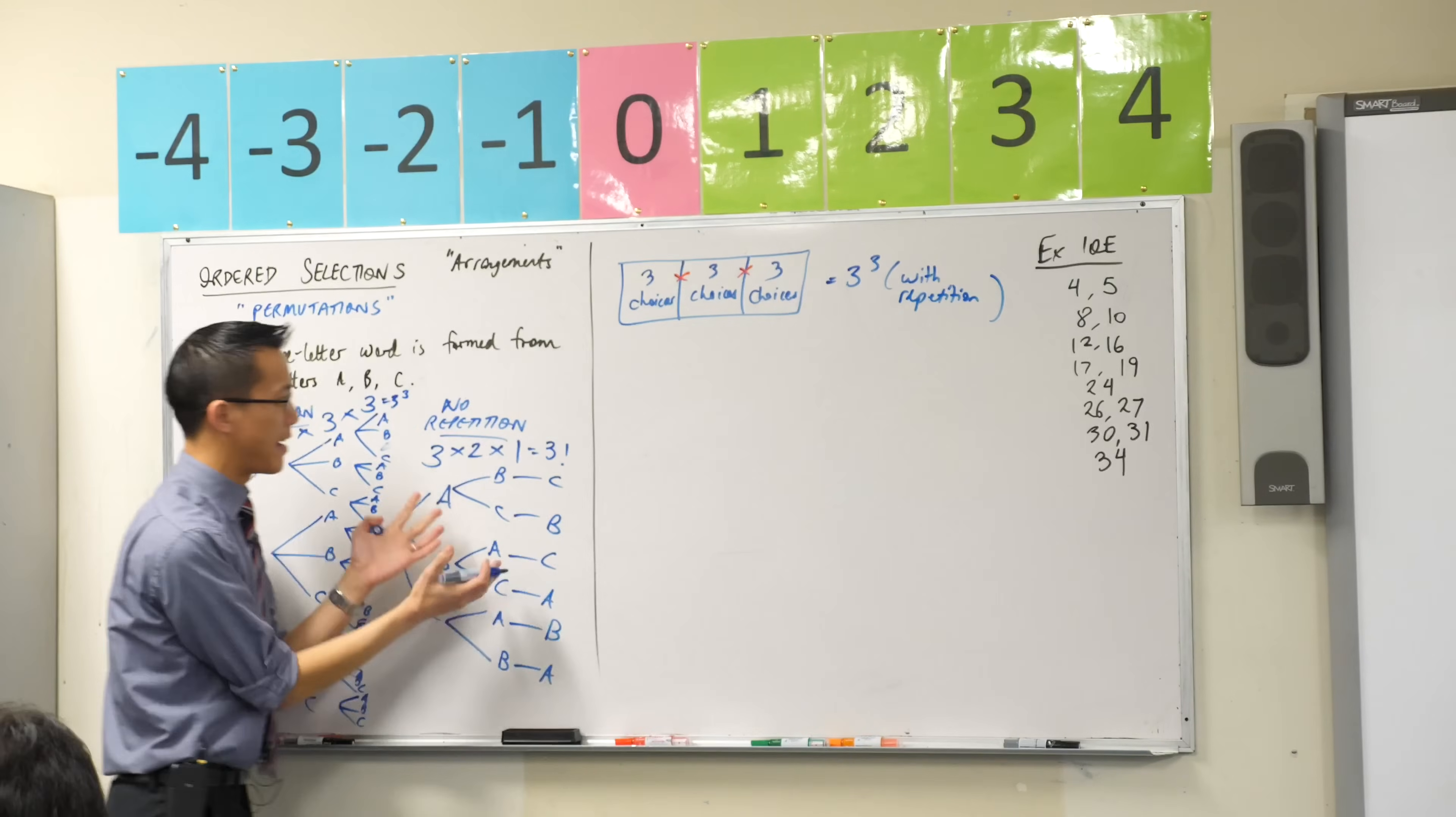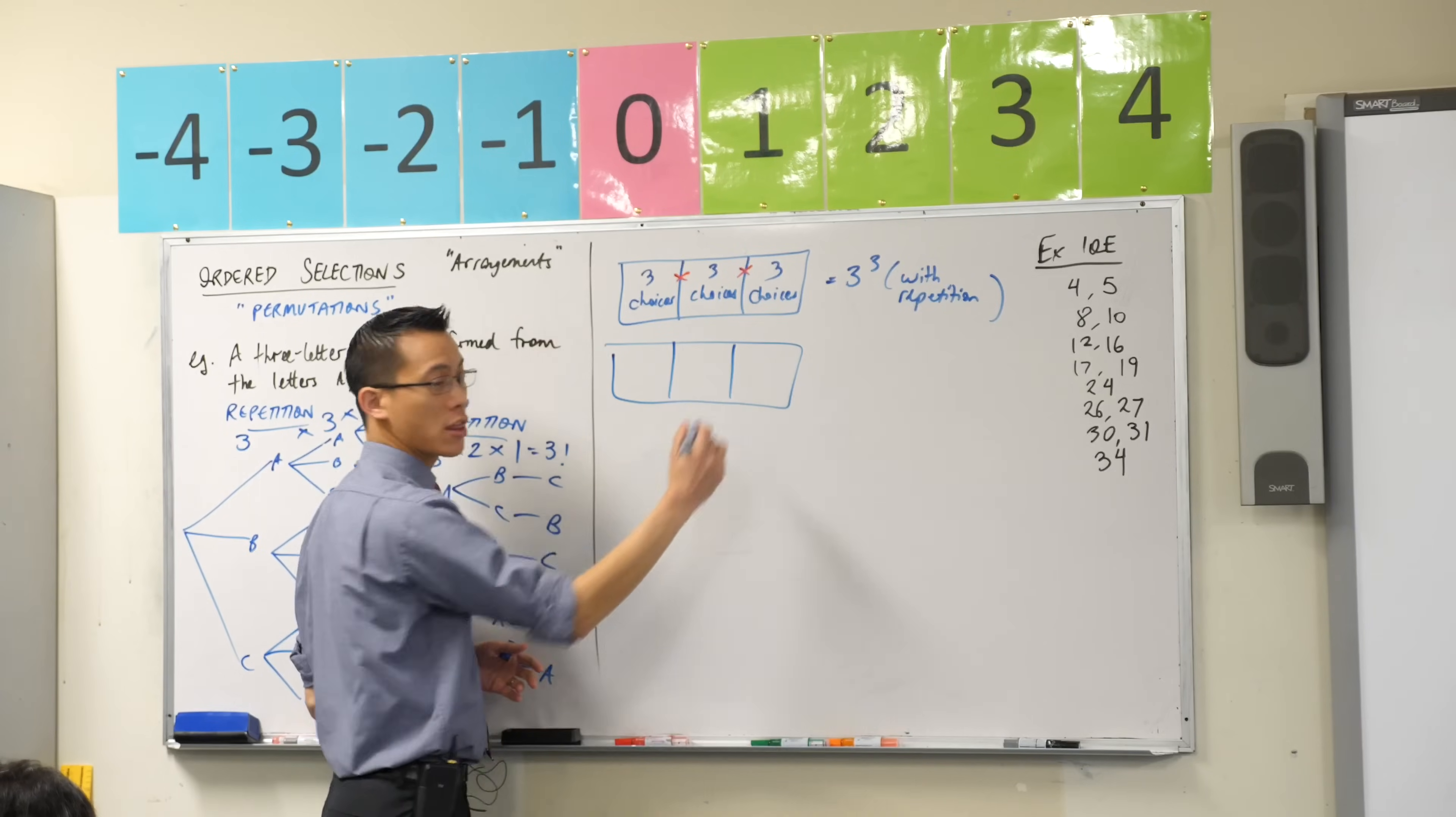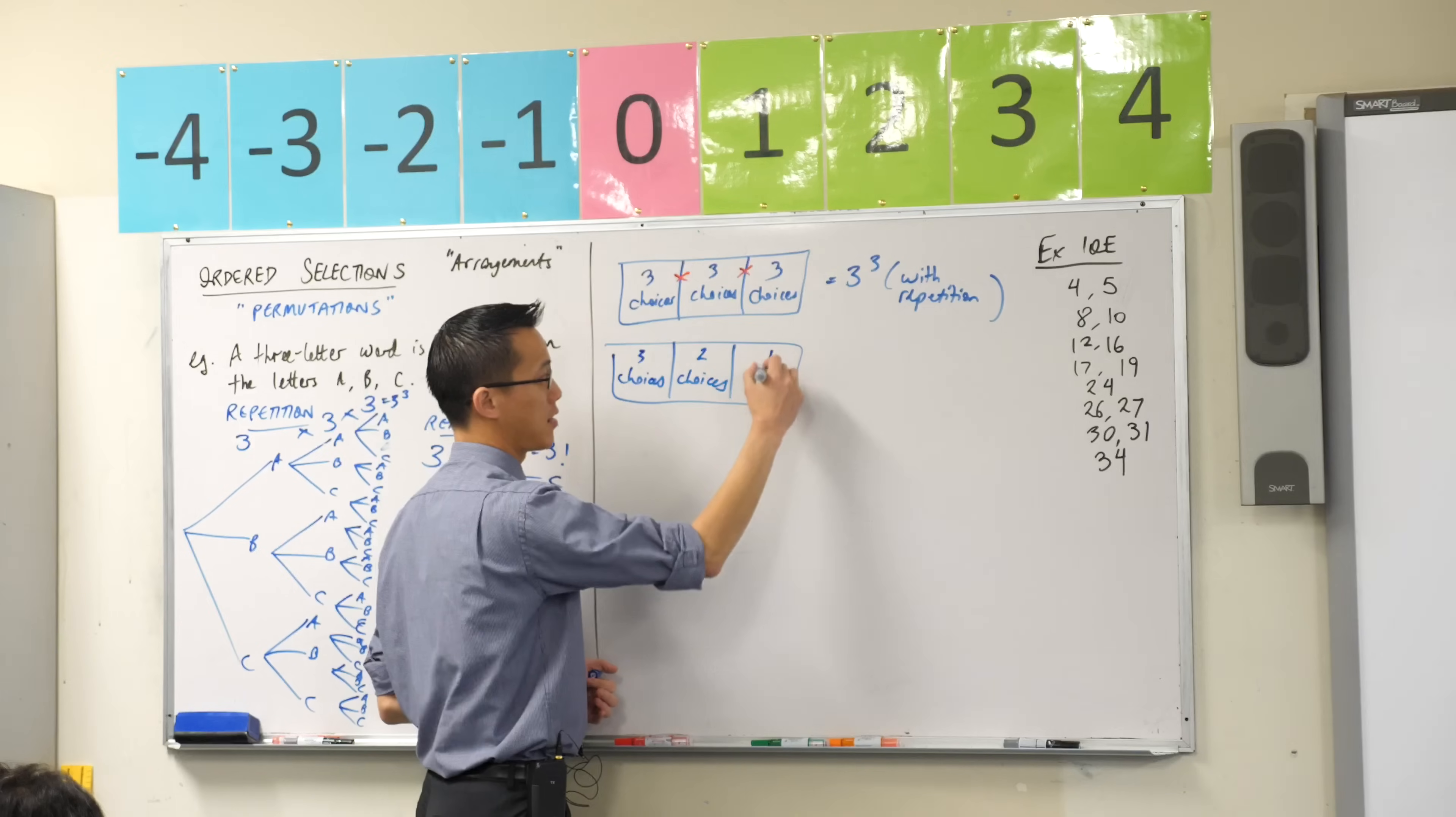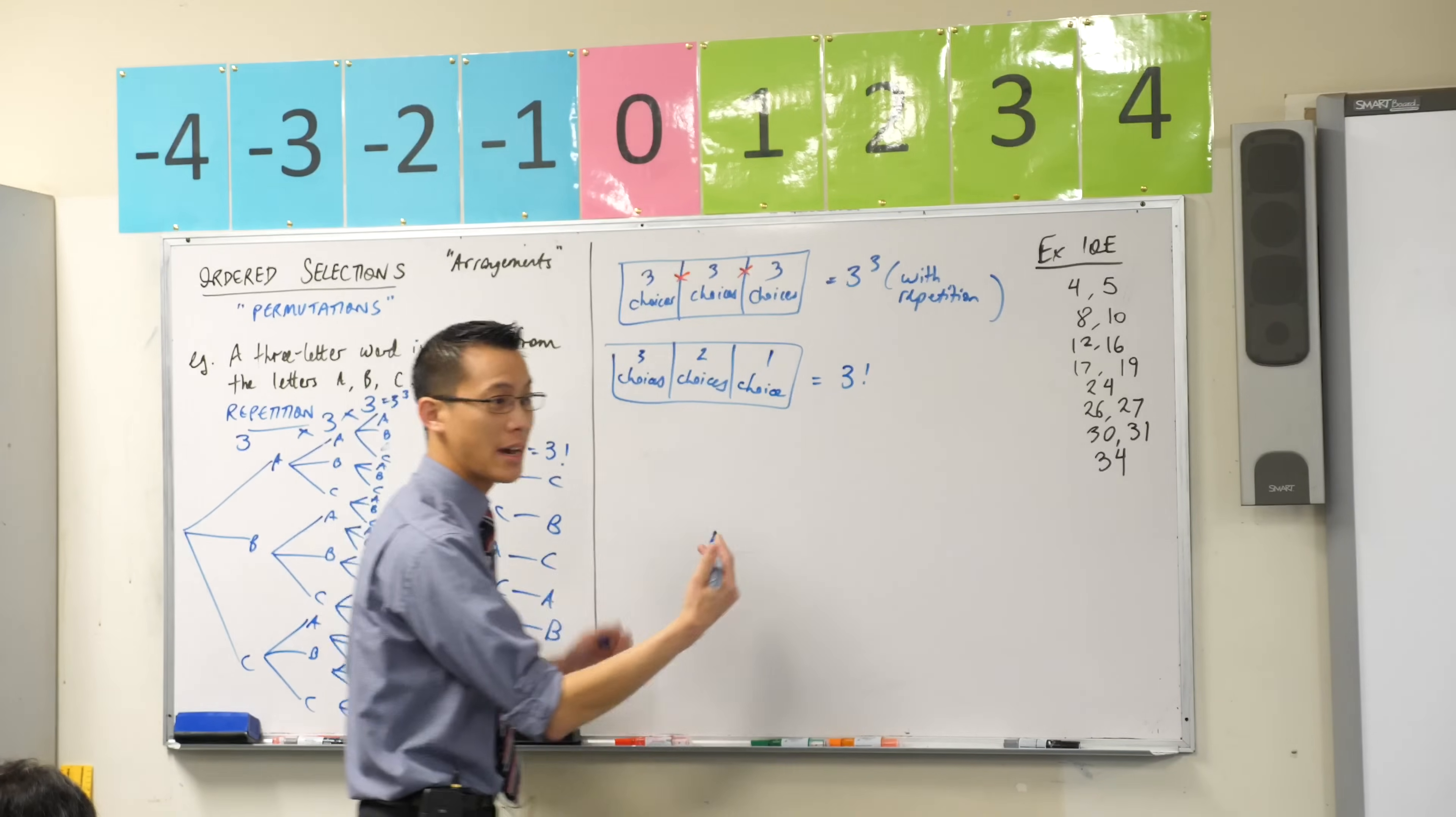So in exactly the same way, if I now consider the situation without repetition, without replacement as it were, I'm still going to have three slots, but the choices change. I start off with three, then I start to whittle them down as I make the choices. And the last one, you've only got one choice left. So that gives you that three factorial, without repetition.